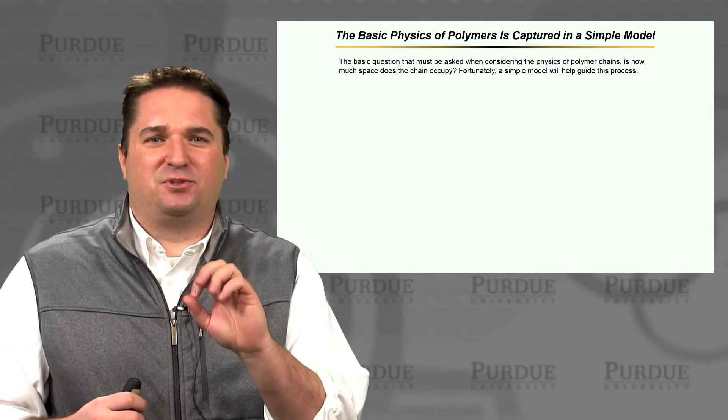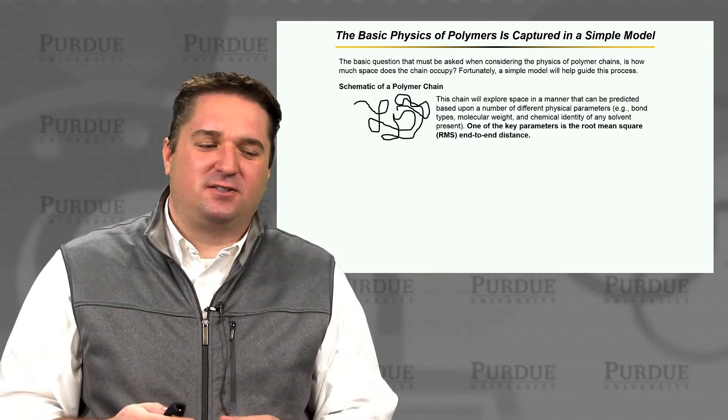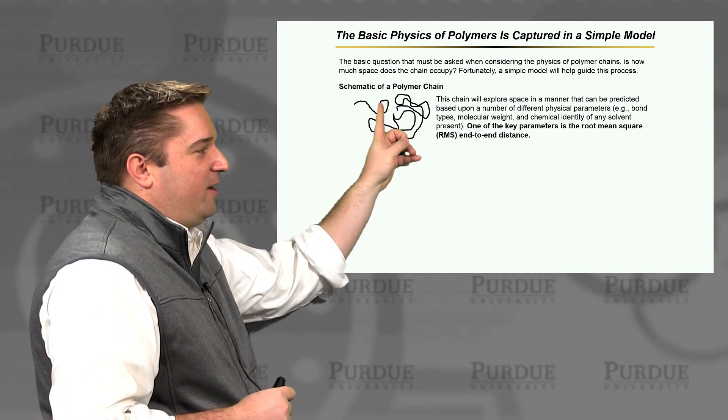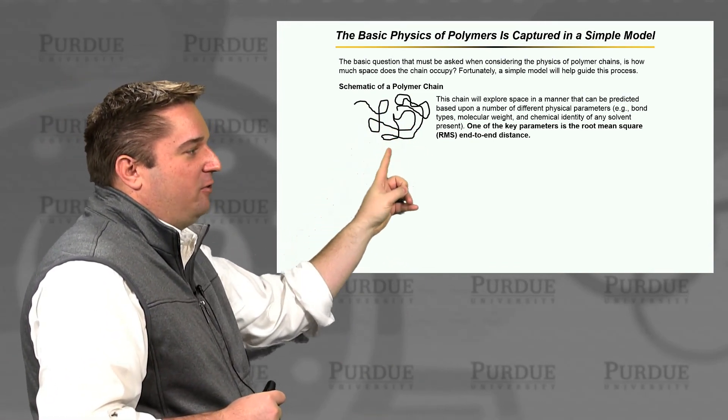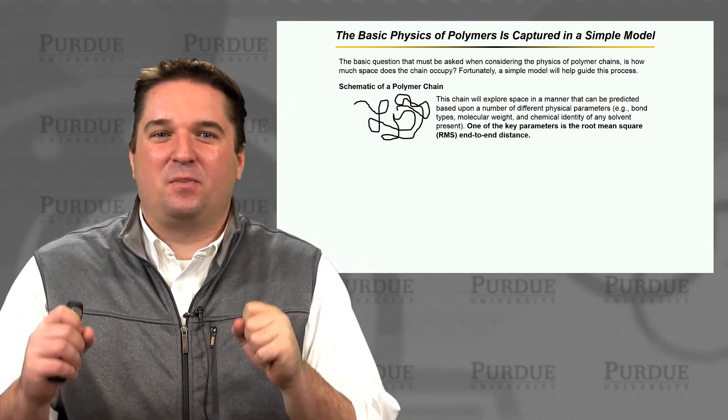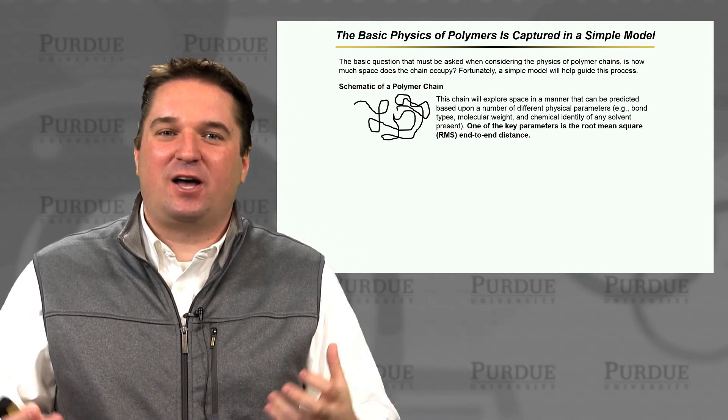And really the first question that pops up is if we have these big pieces of spaghetti that look like polymers, so we have this real kind of black line that we have drawn through here, and this has a number of repeat units in it, how does this occupy space? How does it behave?